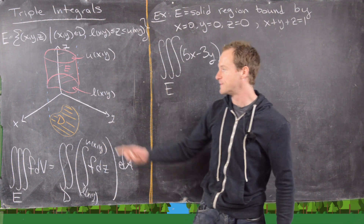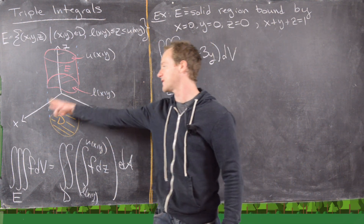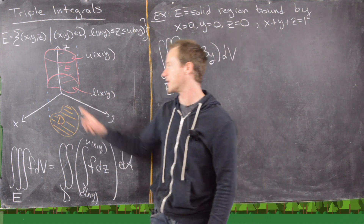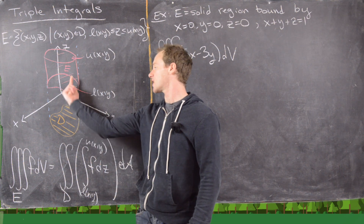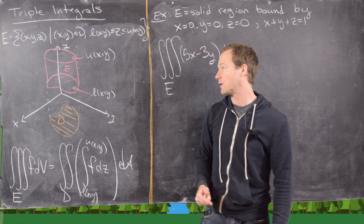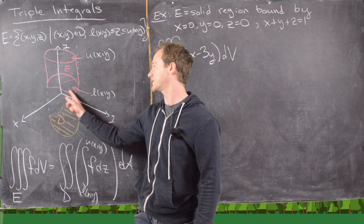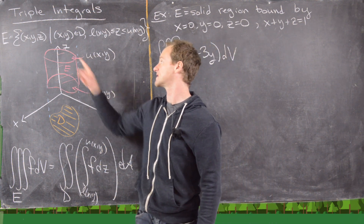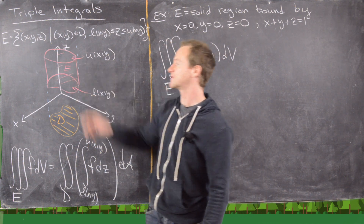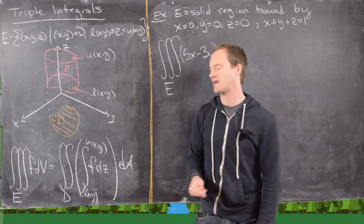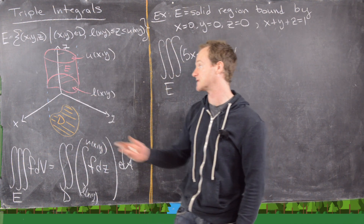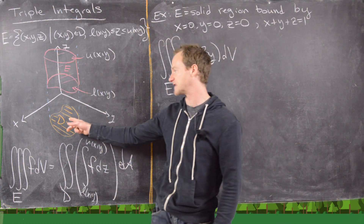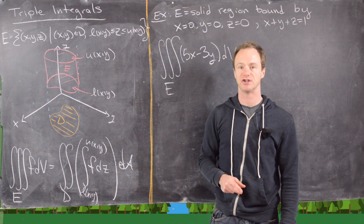I've sketched a picture here. You can think of it as building everything above this region D in the x, y plane, which I've put here in orange. And then if you look up from that spot in orange, you'll see this surface on the bottom, which is L(x, y), and this surface on the top, U(x, y). I've drawn them so they look like planes, but in fact they could be really complicated surfaces. This region E is everything in between those two surfaces right above region D.